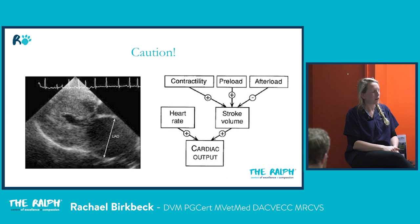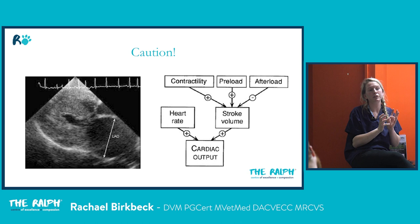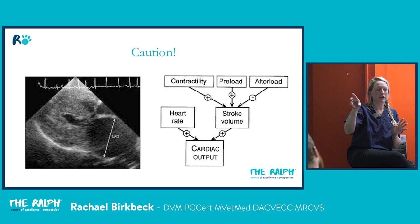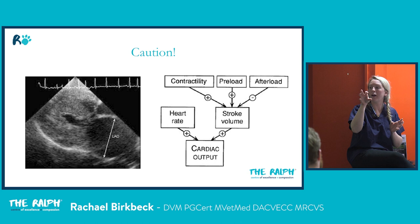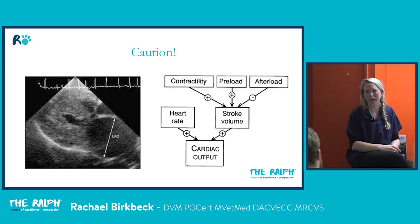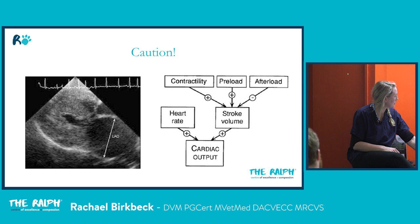I love ultrasound for assessing volume status. Get a view of the left ventricle - if you see the ventricle walls kissing or touching, that suggests loss of volume. Be cautious specifically in cats with hypertrophic cardiomyopathy, which can look like volume depletion when actually there's a very large left atrium and the patient is volume overloaded. So whenever checking the left ventricle for volume, always have a quick look at the left atrium to make sure it's not massive. In dogs, chronic hypertension can also cause left ventricular hypertrophy.